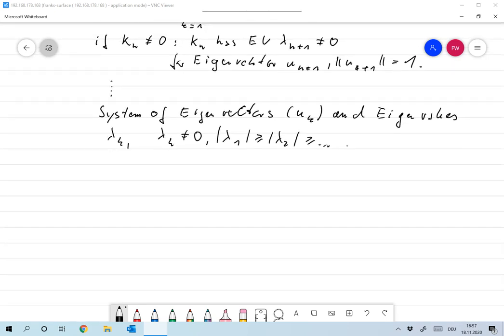So the question is, by that procedure are we getting all the eigenvalues or will we be missing some? Now the question is, do we get all of these? And first of all, we must consider one special case, which I just forgot. And I always assumed that kₙ is not equal to 0.